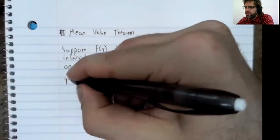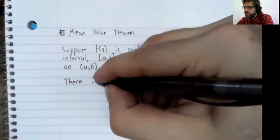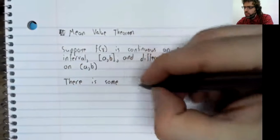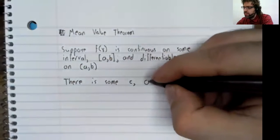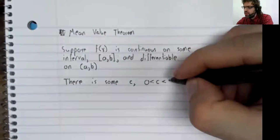The Mean Value Theorem says there is some value c in this interval.